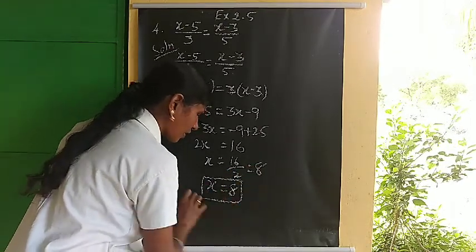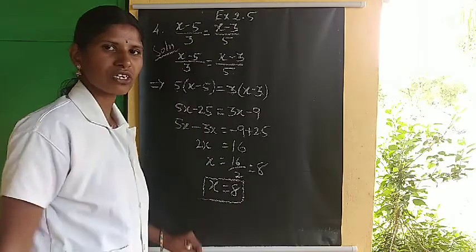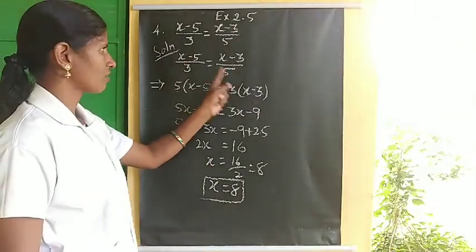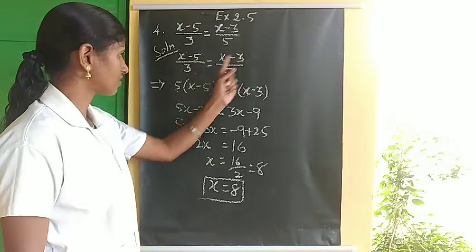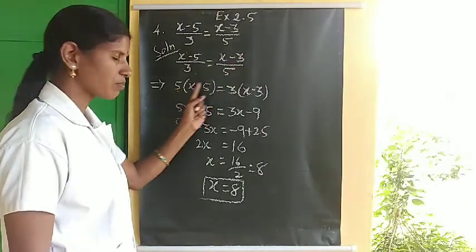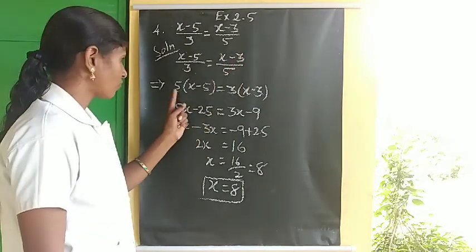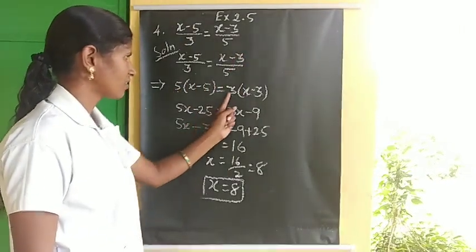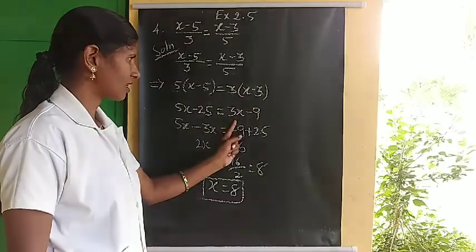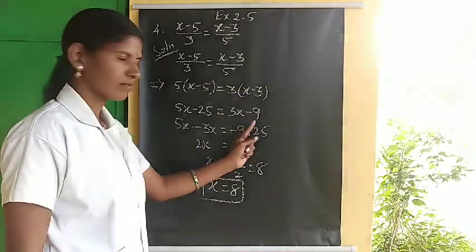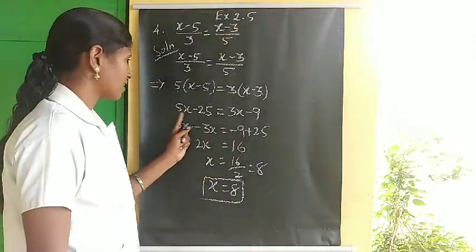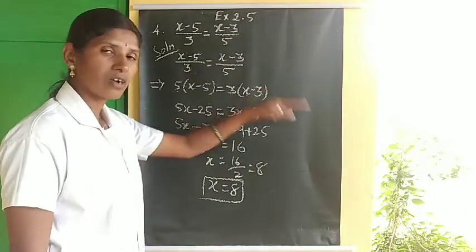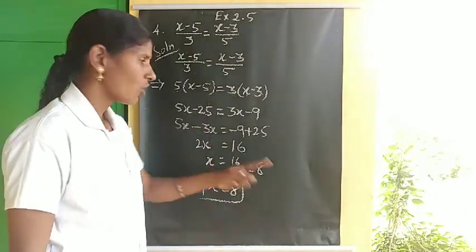This is our required solution. To recap: first step is transpose 5 to LHS and 3 to LHS, then multiply inside — 5 into x gives 5x, 5 fives give minus 25, 3 into x gives 3x, 3 threes give minus 9. Then bring x terms to LHS and constant terms to LHS.